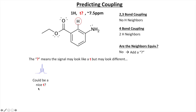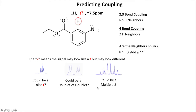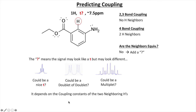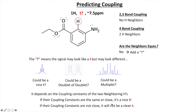The question mark means the signal may look like a triplet but may look different. It's possible it might look like a nice clean triplet with a 1:2:1 area ratio, or it could be a doublet of doublets where it has a large coupling constant and a smaller coupling constant, or it could be a multiplet - just a mass of peaks - which is most likely for this one. It depends on the coupling constants of the two neighboring hydrogens: if the coupling constants are the same or close, like 12 Hz and 11.9 Hz, it could be a nice triplet. If they're not close, it'll be a doublet of doublets or a big mess.